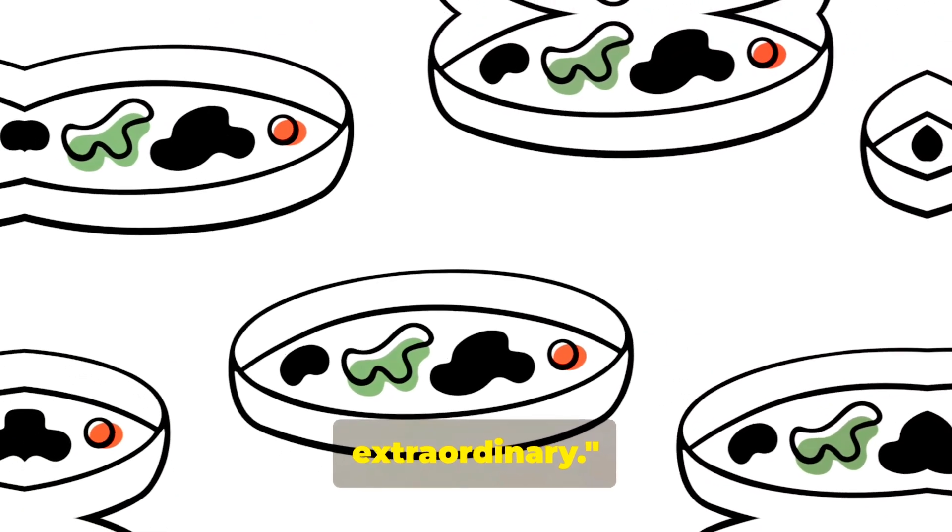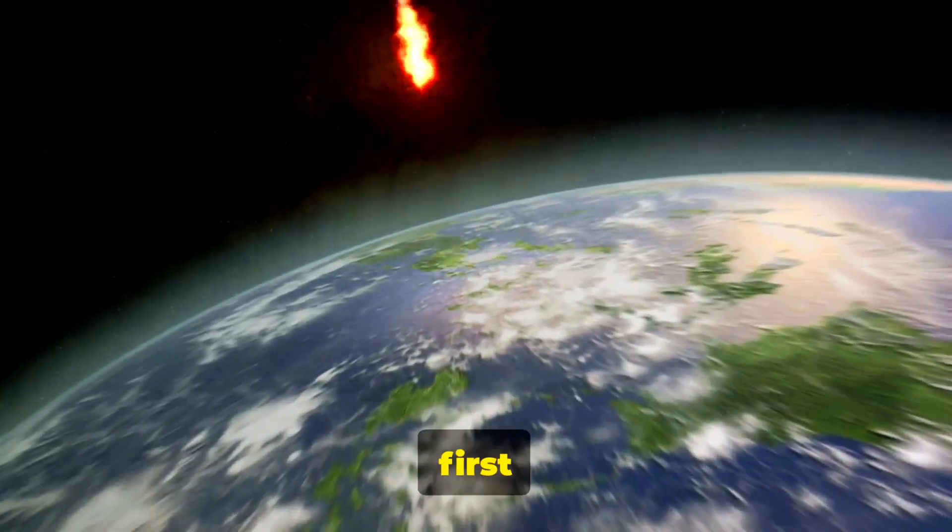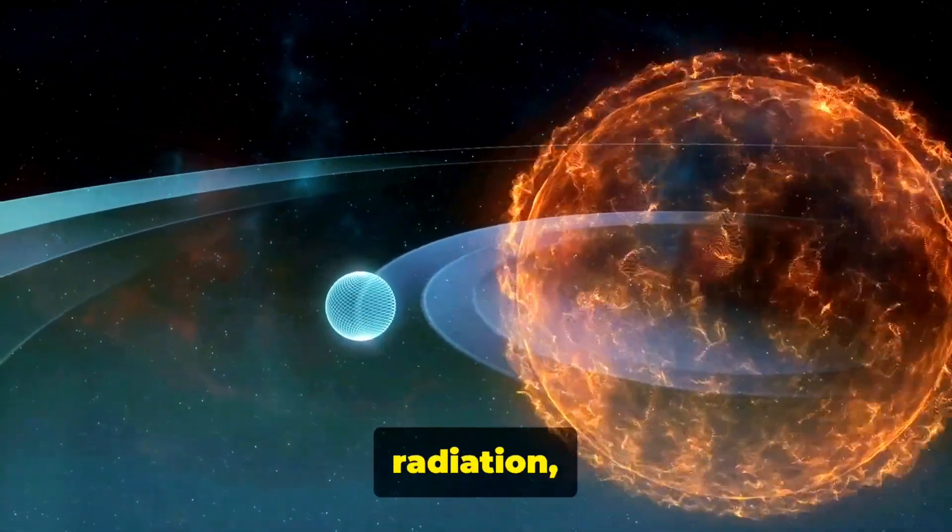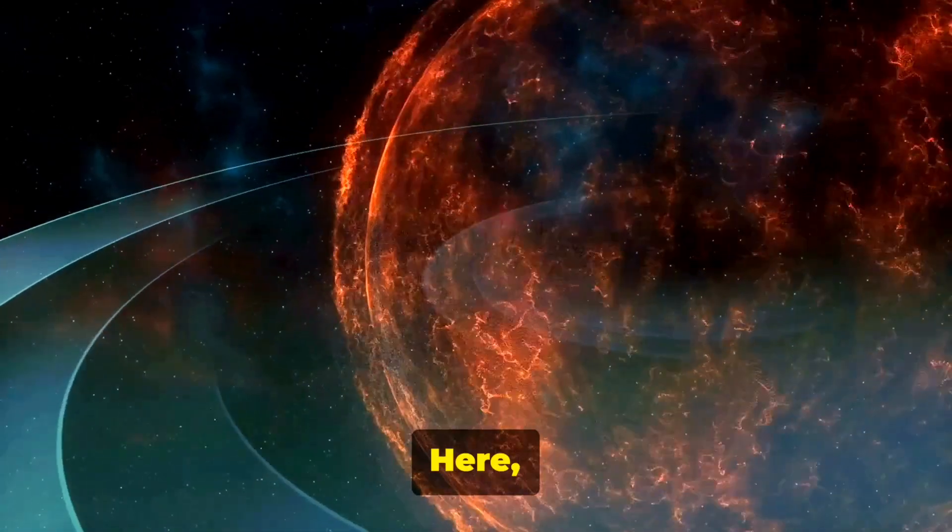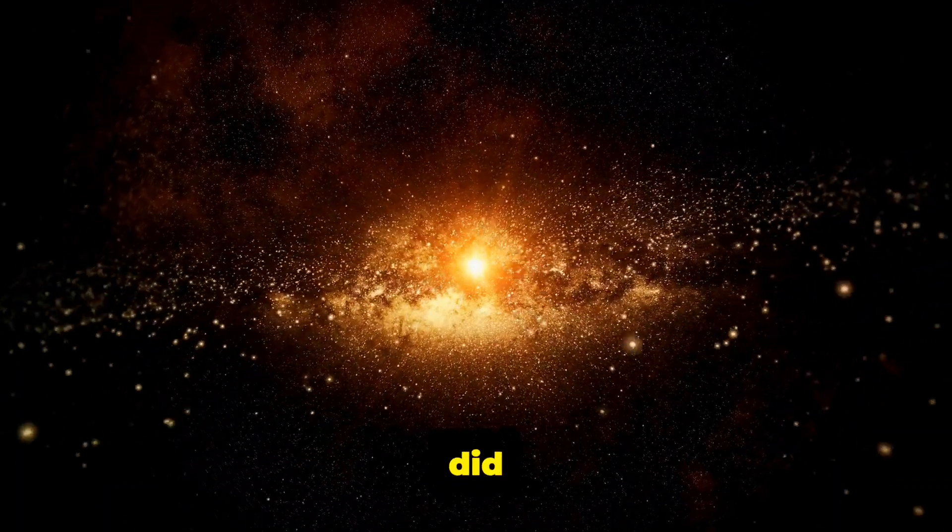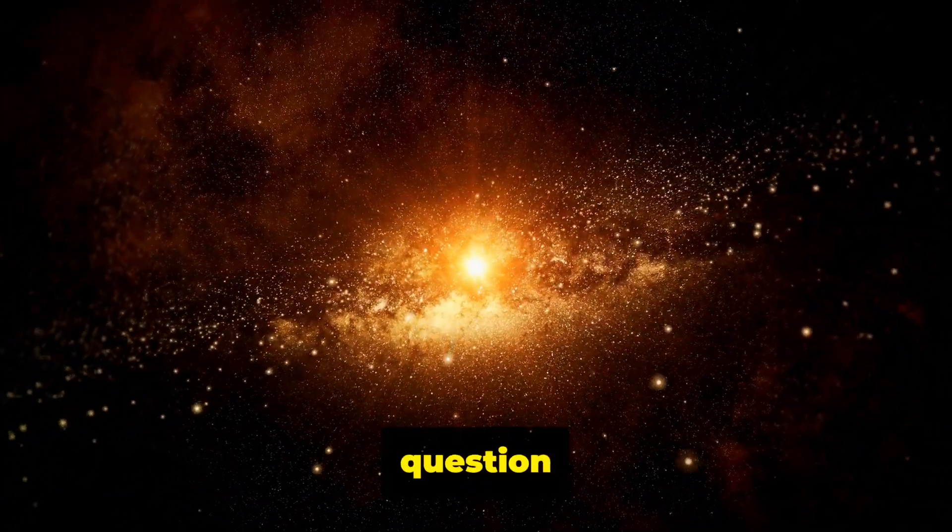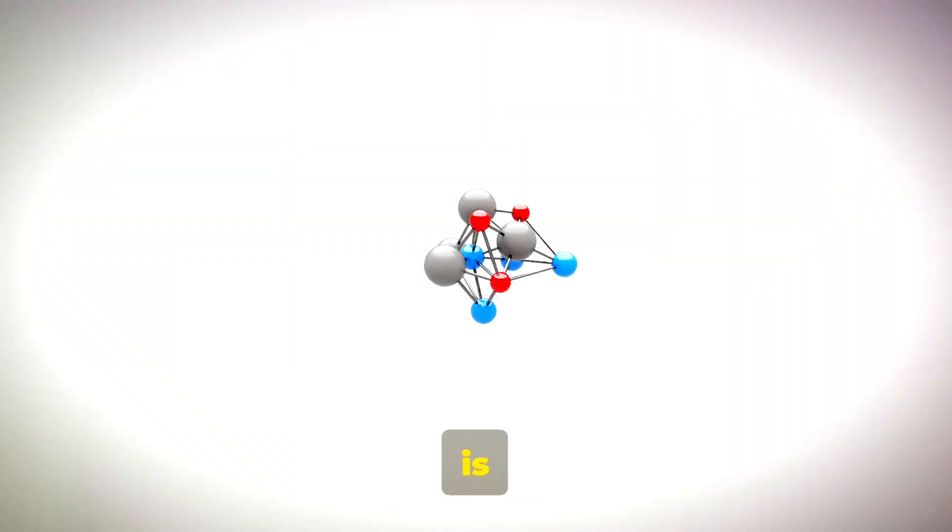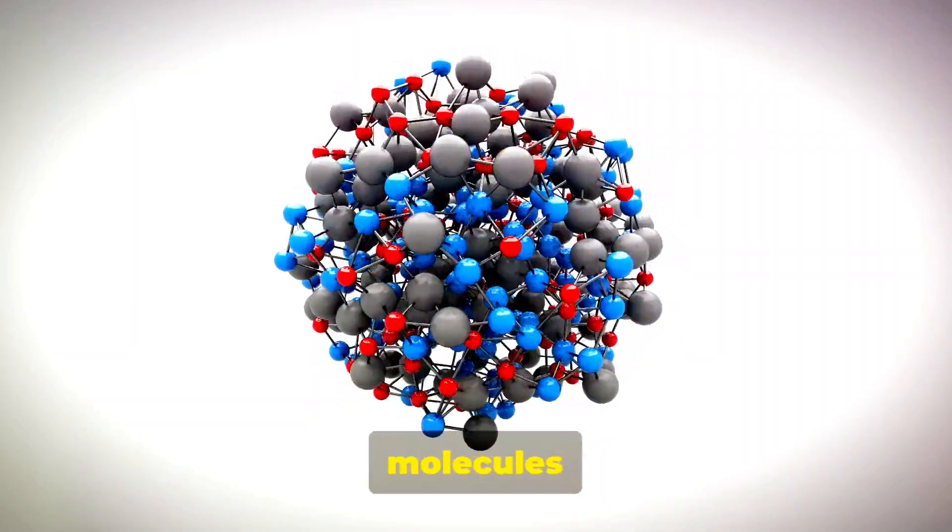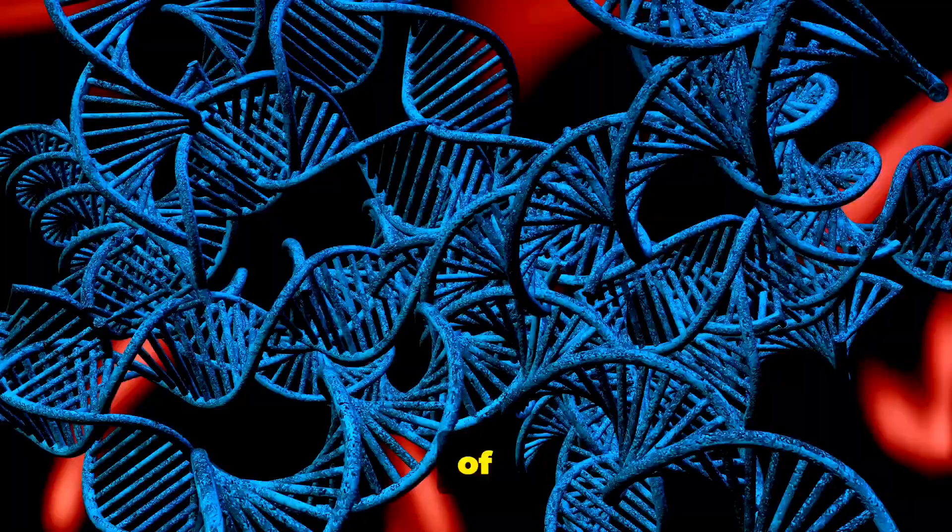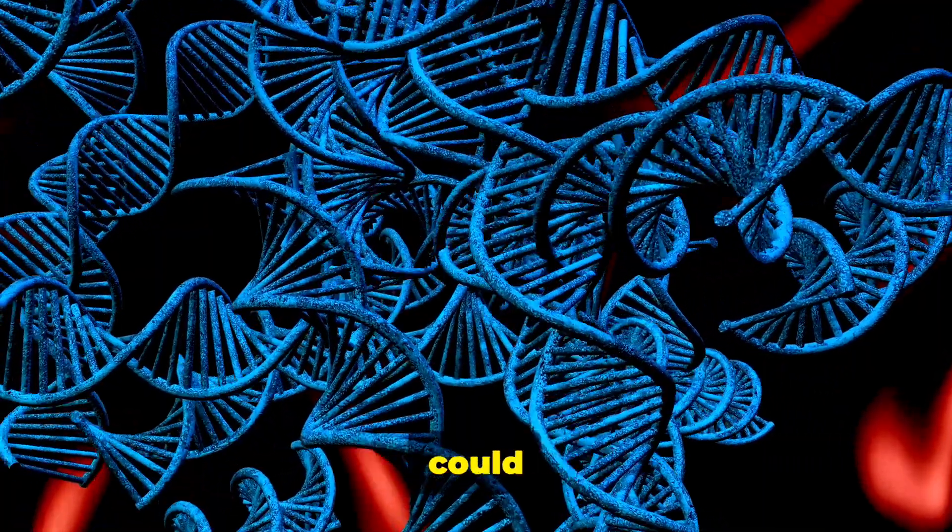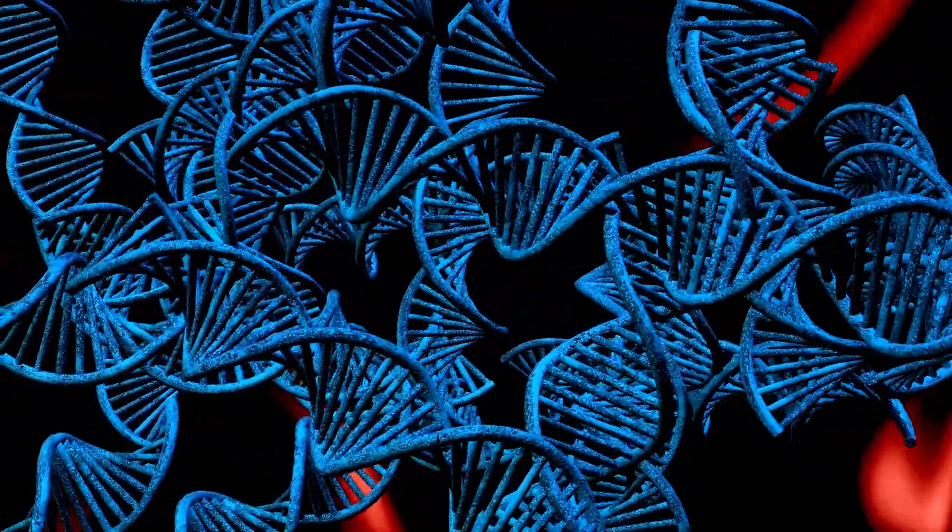In this early Earth, life was about to make its first appearance. Picture a world stirred by volcanic activity, bombarded by cosmic radiation and awash with a potent cocktail of chemicals. Here, in this primordial soup, the first stirrings of life began. But how did it happen? How did non-living matter give rise to living organisms? This question has puzzled scientists for centuries. One compelling theory is known as abiogenesis, the process by which life arises naturally from non-living matter. Picture simple molecules in this primordial soup, driven by the energy of sunlight or volcanic heat, gradually forming more complex compounds. Over time, these complex compounds could have developed into self-replicating molecules, the precursors to DNA.